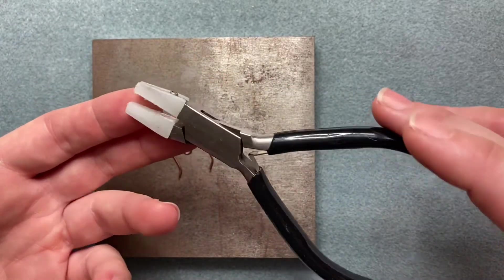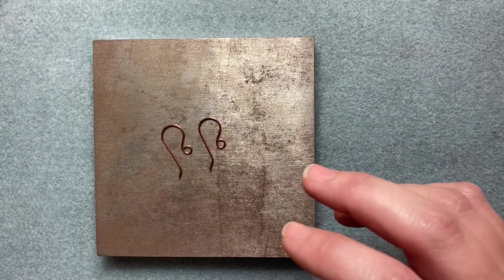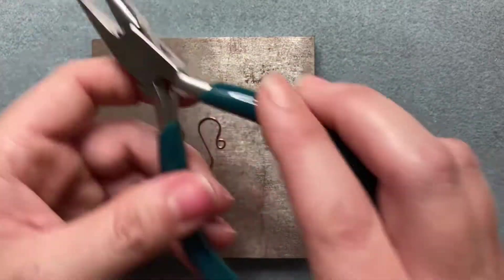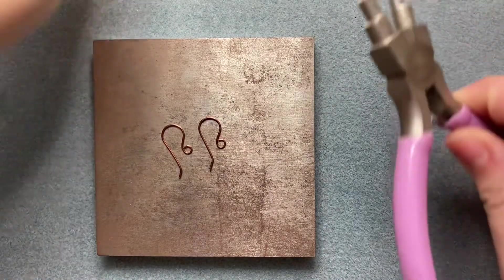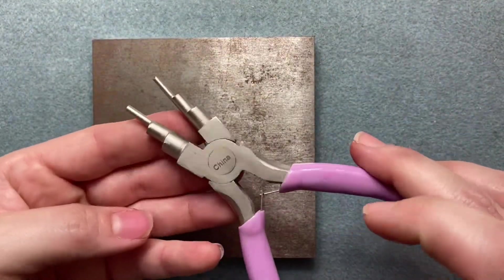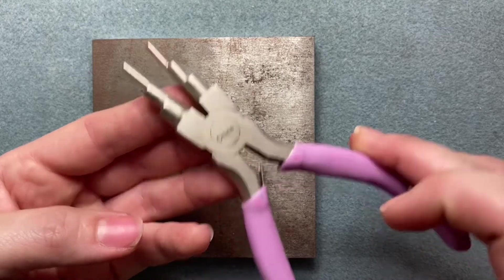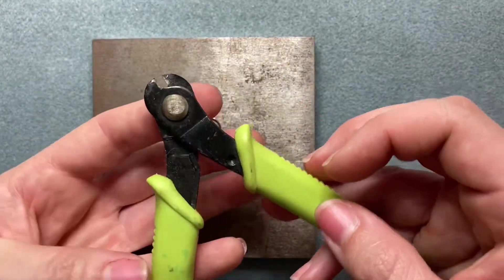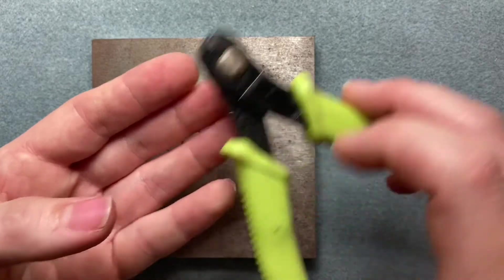Chain nose pliers, bail shaping pliers, and flush cutters. These are used to cut your wire.